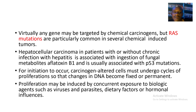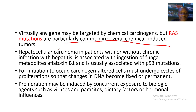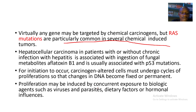RAS mutations are particularly common in several chemically induced tumors. Hepatocellular carcinoma in patients with or without chronic hepatitis infections is associated with ingestion of fungal metabolites — aflatoxin B1 — and is usually associated with p53 mutations. For initiation to occur, carcinogen-altered cells must undergo cycles of proliferation so that changes in DNA become fixed and permanent. Proliferation may be induced by concurrent exposure to biological agents such as viruses and parasites, dietary factors, or hormonal influences.